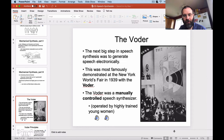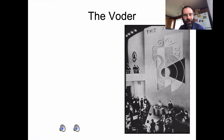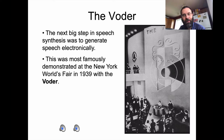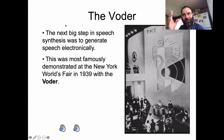After these initial attempts at mechanical synthesis, electronics started becoming more common. The first famous attempt at generating speech electronically was called the Voder, developed by Bell Labs. This was created for the New York World's Fair in 1939 — a fair all about the future and new technology. The Voder was generating speech electronically, but it had to be manually controlled: they hired female employees and trained them to play this machine, kind of like playing a very complicated organ.